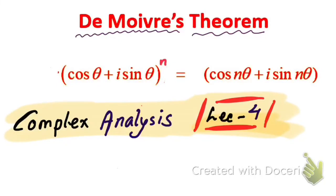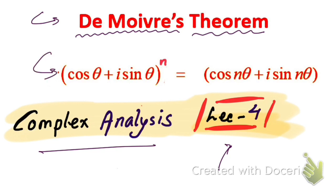Hello friends, welcome to lecture number 4 of complex analysis. Today our topic of discussion is De Moivre's theorem. The theorem states: cosine theta plus i sine theta, whole to the power n, equals cosine n theta plus i sine n theta.